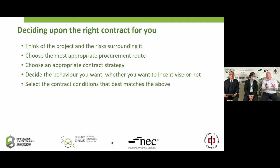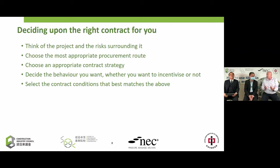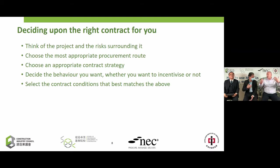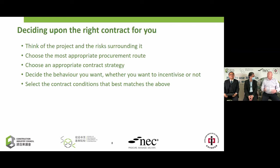The right approach — which I've borrowed from John Broome's book on procurement routes for partnering — is to first think about the project itself and the risks that surround it. Understand what you're trying to achieve and what threats may jeopardize a successful outcome. Then choose the most appropriate procurement route: design and build, client design, PFI, PPP. Then look at your contract strategy: ECI, two-stage tendering, single stage, negotiated, or competitive bidding.